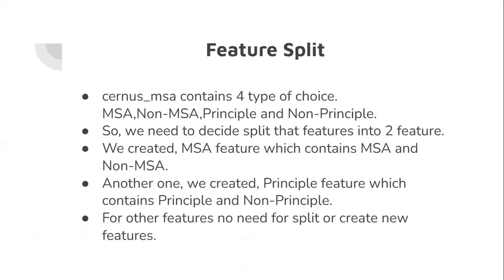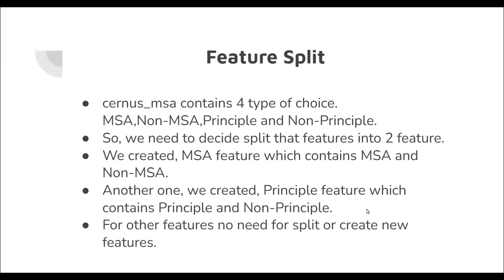Feature split. The census MSA column contains four types of choice: MSA, non-MSA, principal, and non-principal. So we decided to split the feature into two features. We created an MSA feature which contains MSA and non-MSA, and we created a principal feature which contains principal and non-principal. For other features, there was no need to force a split or create new features.